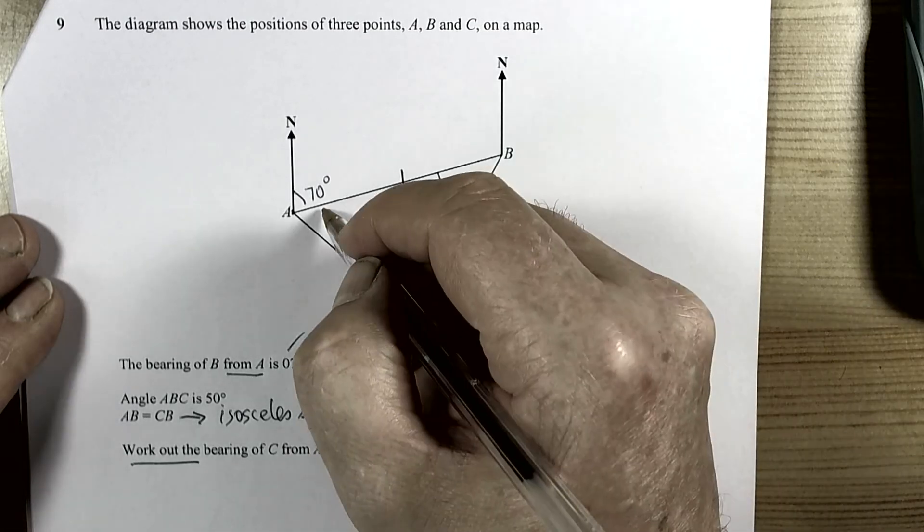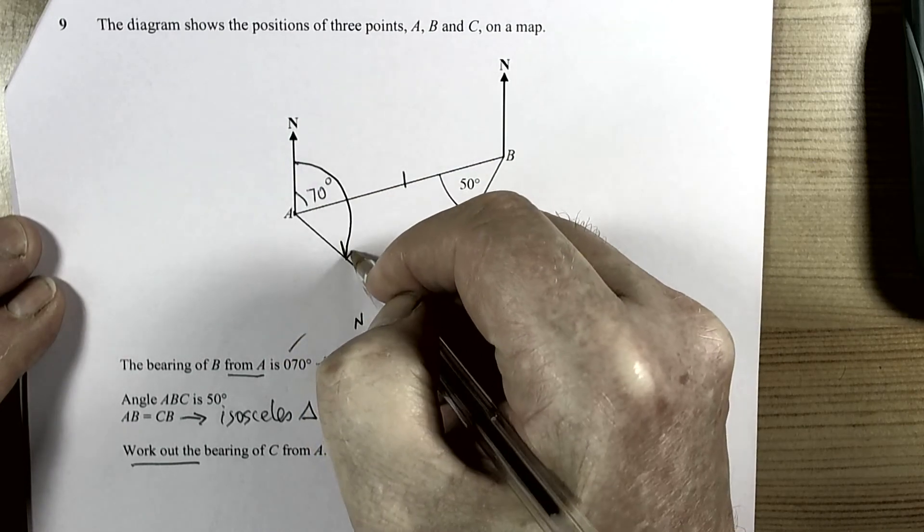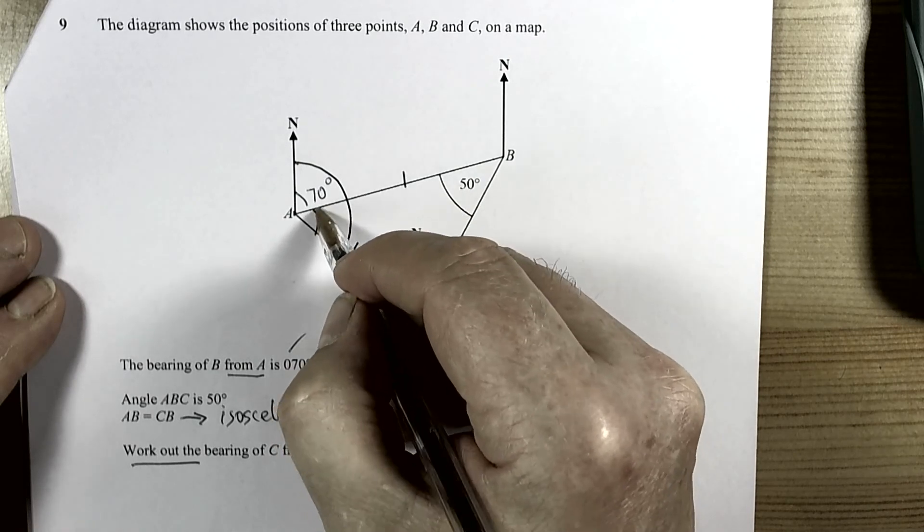C from A. So in other words it wants the whole of that angle from there to there. So we want the whole of this angle. So we need this angle here.